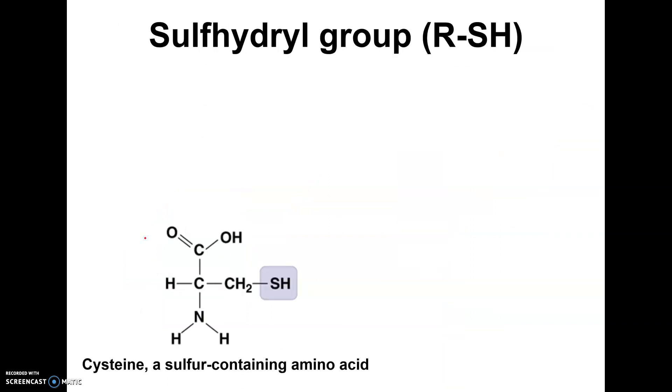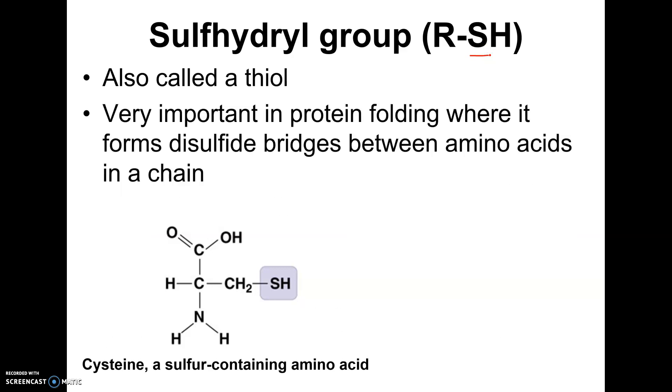The next one's called a sulfhydryl. That, to me, is easy to remember because sulfur, it's the only one that has a sulfur on it. It is sometimes called a thiol. That's not as easy to remember. And this one is very important in proteins because proteins tend to fold up. And this sulfhydryl group, when you have two amino acids that both have this,